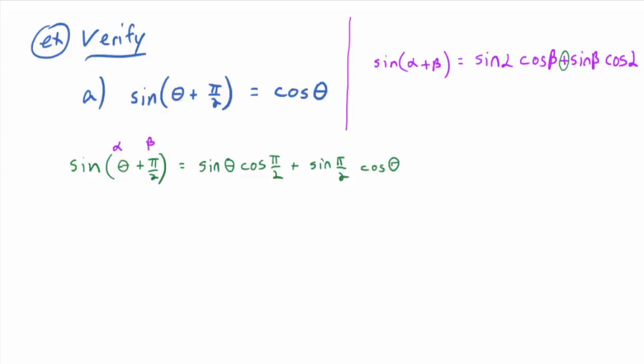Cosine of pi/2 equals zero, so the first term becomes sine theta times zero, which is zero. Sine of pi/2 equals one, so the second term is 1 times cosine theta. Therefore the expression equals cosine theta, which is the right-hand side. Done.